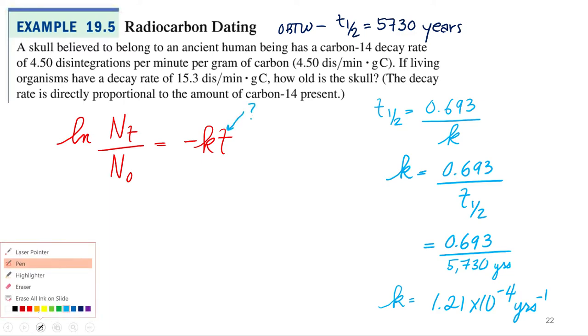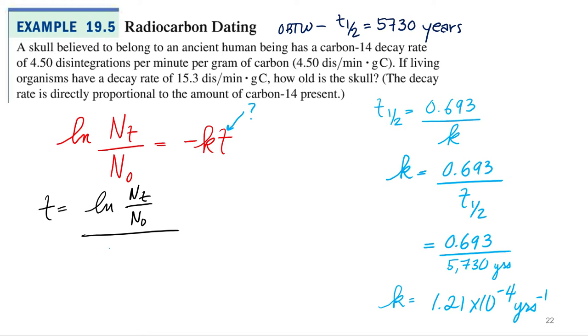So we'll just rearrange this equation for t, right? So we've got t equals natural log of N sub t over N sub 0 all over negative k. Now, the Nt is 4.50? That's what we've got to figure out. So N sub t, that's my amount at time t. N sub 0, that's my initial amount.